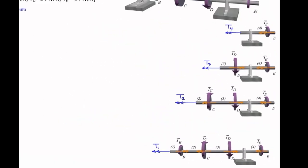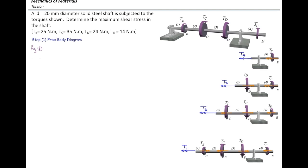We have four free bodies because we have four shafts and need to determine torques in each. Now let's write down the equilibrium equations starting with the first figure. There are two torques, and we consider right positive and left negative. So: negative T4 minus Te (which is 14 N·m) equals zero, giving T4 equal to negative 14 N·m. For figure 2: negative T3 plus Td (24) minus Te (14) equals zero, giving T3 equal to positive 10 N·m.